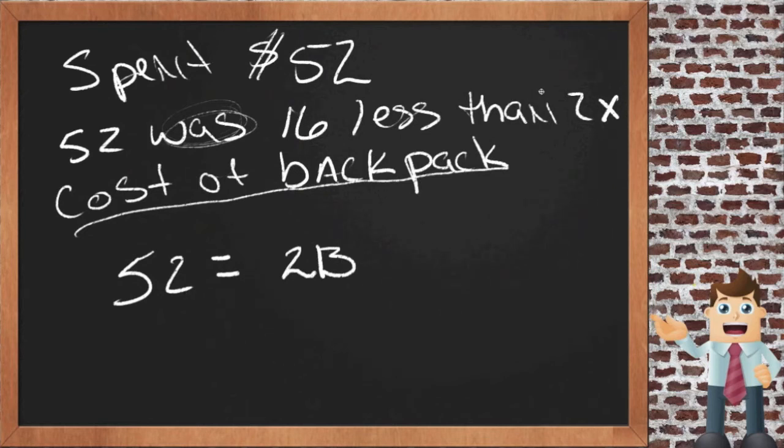But it says that $52 is $16 less than that. So that means I'm going to have to start with that and take $16 away from it. $16 less than 2 times the cost of the backpack is $52. This equation here would represent what you're trying to solve.